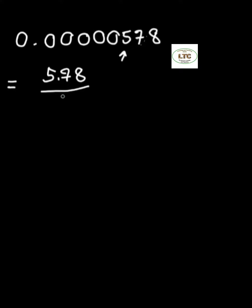If you divide 5.78 by 10, you get 0.578. If you divide by another 10, you get 0.00578. Like this.